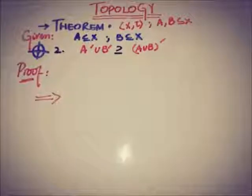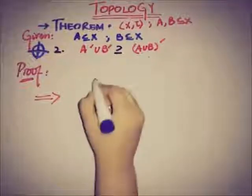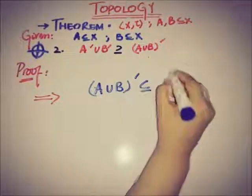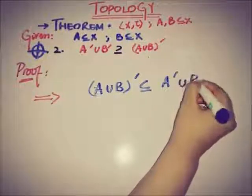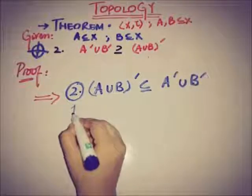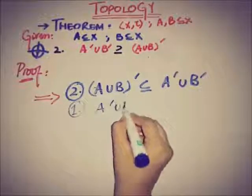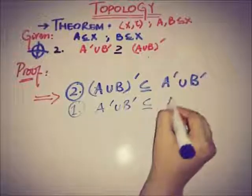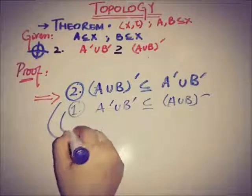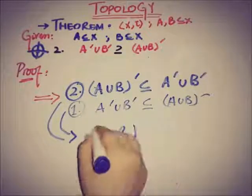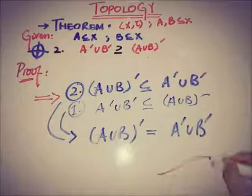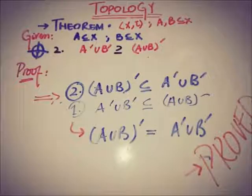Therefore a belongs to A'∪B', proving that (A∪B)' ⊆ A'∪B'. Combined with the first part, both inclusions together imply that (A∪B)' = A'∪B'. The theorem is fully proved in two parts.